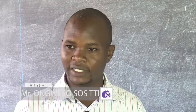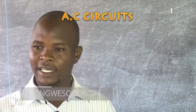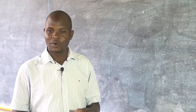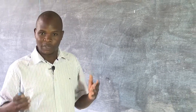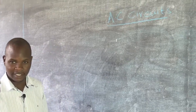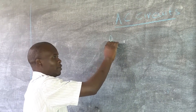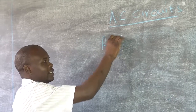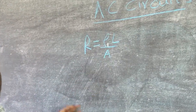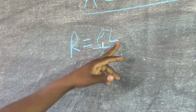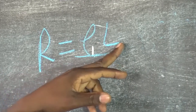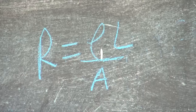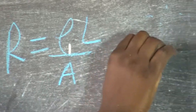I'm going to present a topic in electrical engineering under AC circuits. In our previous lesson, we learned on the same topic — AC circuits — but we analyzed resistance. We managed to come up with the expression that resistance is given by ρL/A, where ρ is resistivity, L is the length, and A is the cross-sectional area. The SI unit of resistance is ohms.